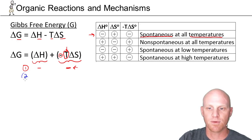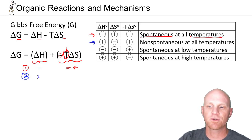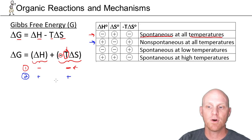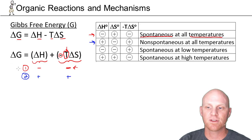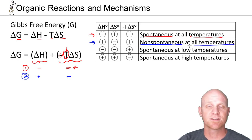In situation two, we have the exact opposite: positive delta H, so the first term is positive, and negative delta S, which means negative T delta S is also positive. With both terms positive, you can't help but get a positive delta G, regardless of temperature. This reaction is non-spontaneous at all temperatures — or equivalently, the reverse reaction is spontaneous at all temperatures.